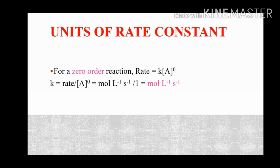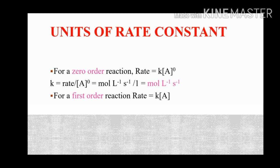For a zero order reaction, the unit of rate constant is equal to mol L⁻¹ s⁻¹. For a first order reaction, the rate is equal to k into concentration of A, where the power is 1.